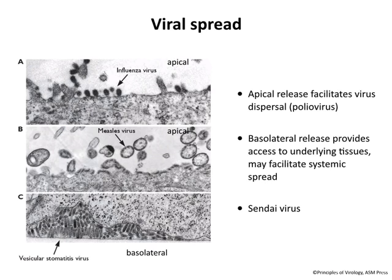The ability of a virus to spread also depends on where it's produced. Many envelope viruses bud at the plasma membrane, but cells lining mucosal surfaces are polarized — there's an apical and a basolateral domain, which are chemically distinct. Some viruses bud at one or the other or both. Electron micrographs show viruses budding from polarized epithelial cells. Influenza buds apically, not basolaterally, so it does not spread systemically very often. But budding apically is great because now you're in the lumen of the respiratory tract — when the host sneezes or coughs, they transmit the virus to someone else.